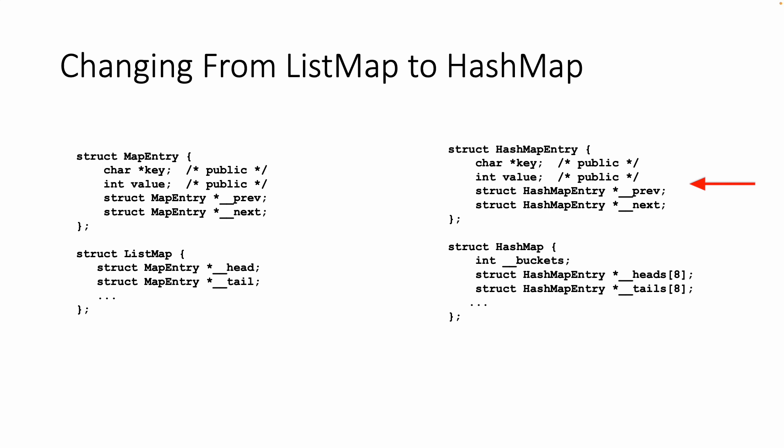The key to the hash map is there's multiple linked lists, and we see that in struct hash map. underscore_buckets is how many buckets we have. In a more sophisticated hash map implementation, we would have the number of buckets grow as size grew and the list got too long.